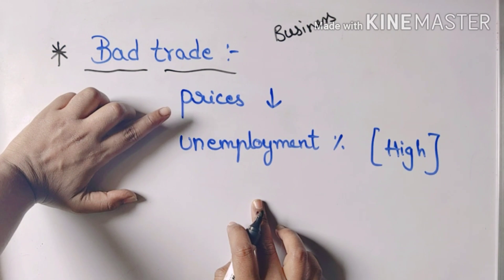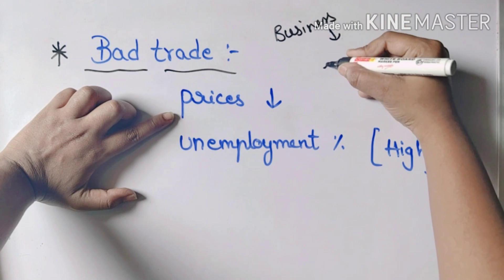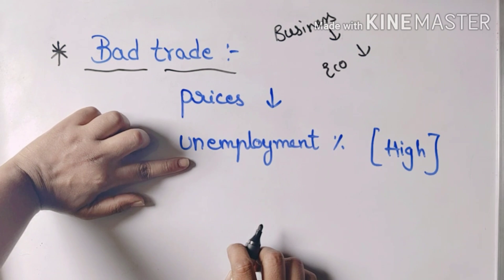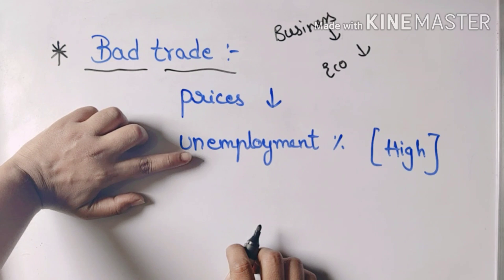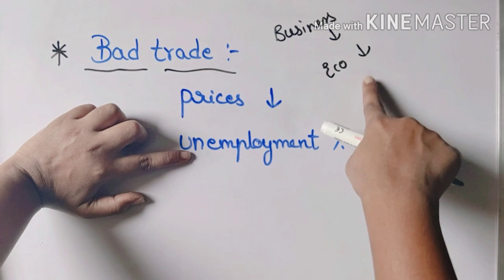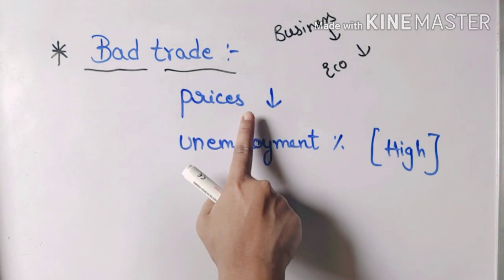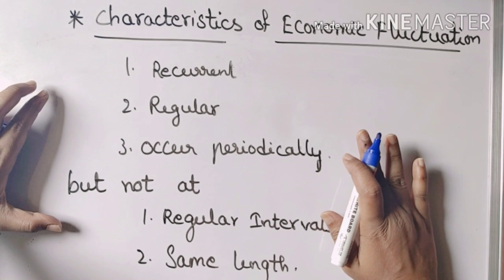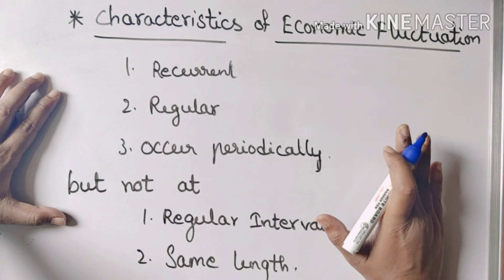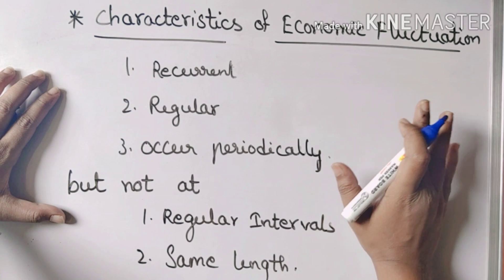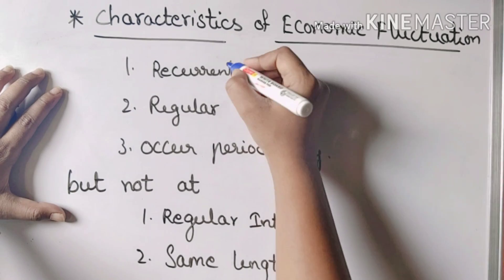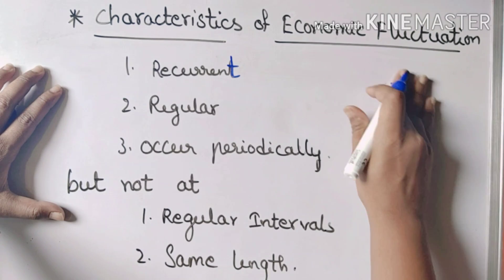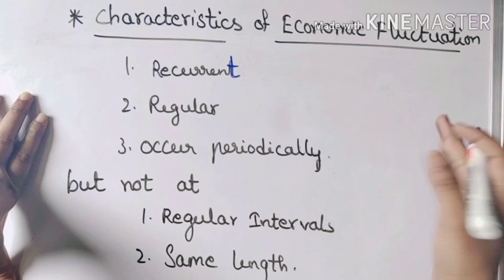Business prices and unemployment percentage are related. If prices are low, the business is also lower. This is the main concept: economic fluctuations can be higher or lower. These are the characteristics of economic fluctuations.